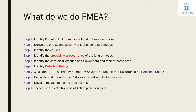As part of FMEA, there are certain steps. Step one is to identify the potential failure modes related to the process or design. The reason we say 'potential' is that we need to identify the failure mode before it actually occurs. Step two is to derive the effects and severity of the identified failure modes.